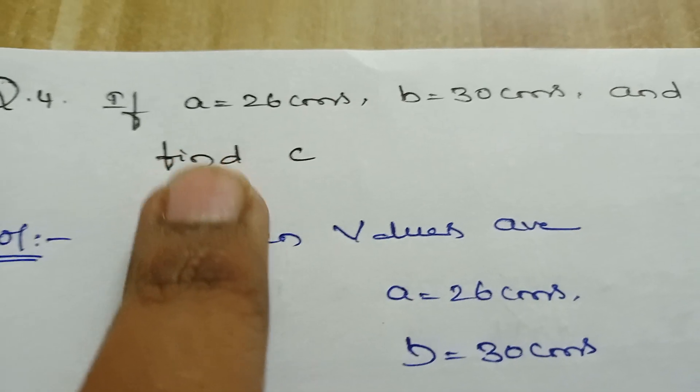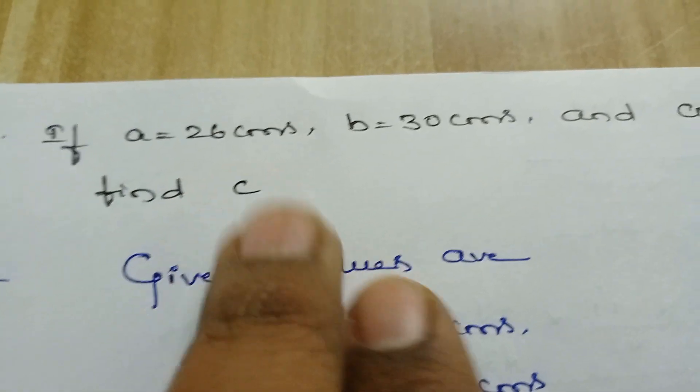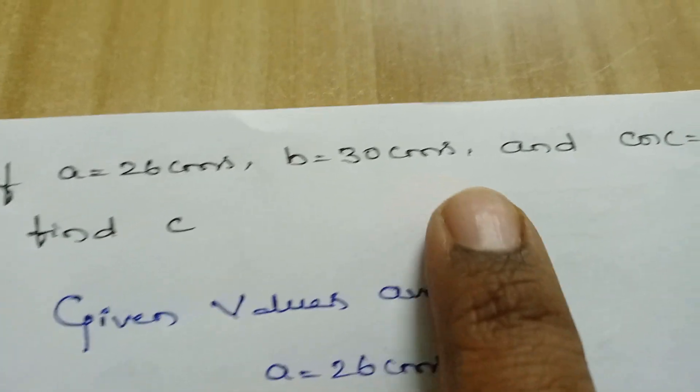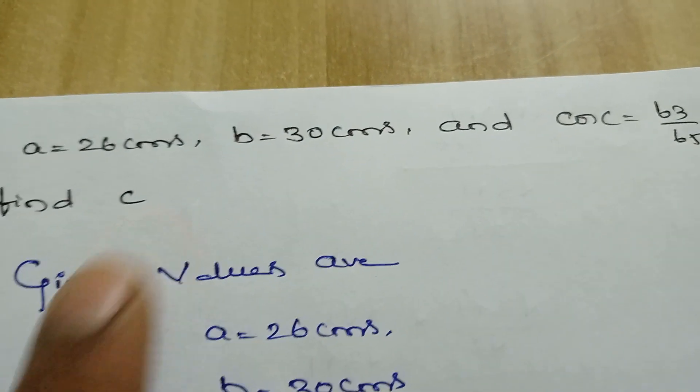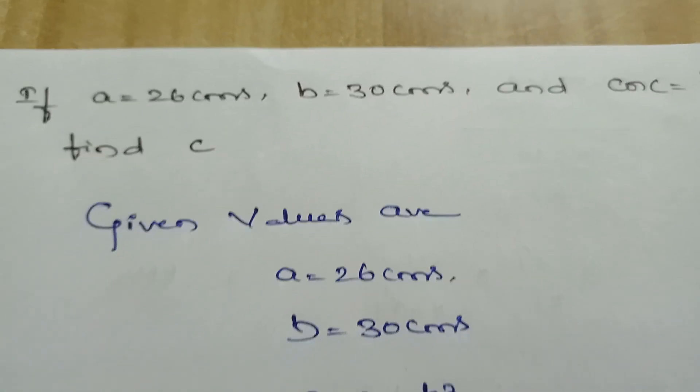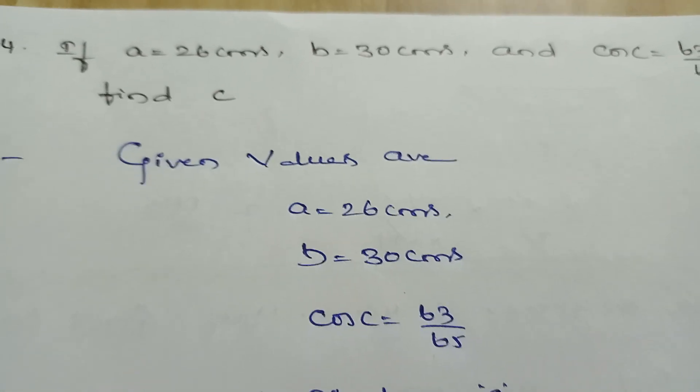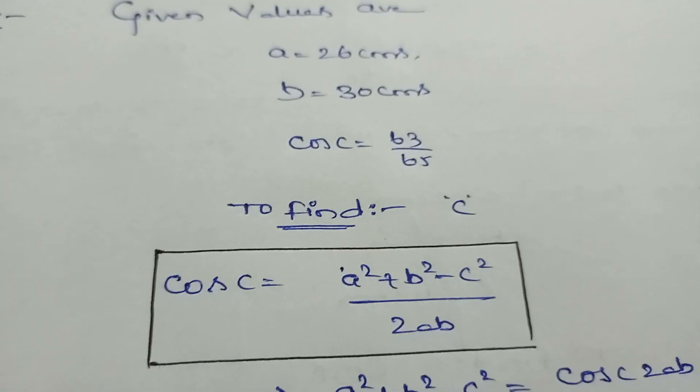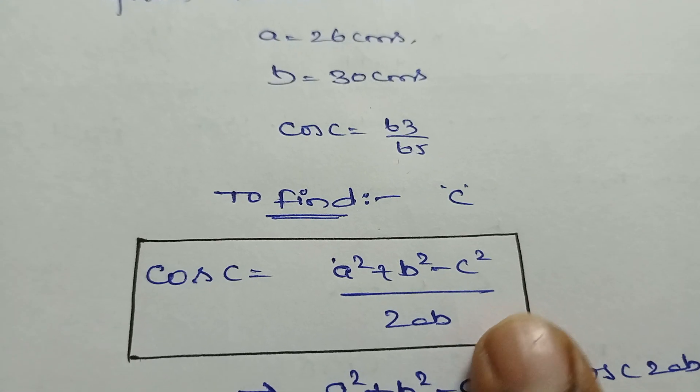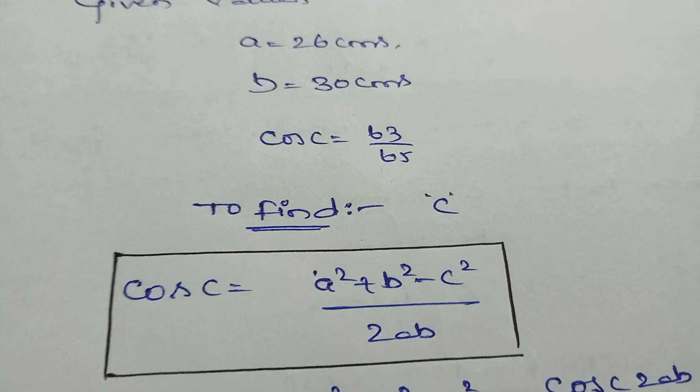So what is given here? If a = 26 cm, b = 30 cm, and cos C = 63/65, then find c. In the previous video I mentioned the formula, right? Cos C value is a² + b² - c² / 2ab. Based on this formula we can find c value.